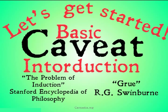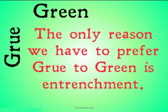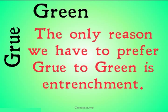With that out of the way, let's get started. We were last left with Nelson Goodman's riddle of induction, having a problem distinguishing between grue and green. The problem is that the only reason we have to prefer green over grue is entrenchment — we're really used to using green as a predicate and so we want to use it, but we don't have any really good reason for using it instead of grue. Swinburne is going to try to give us a good reason.